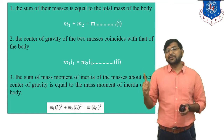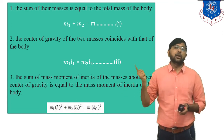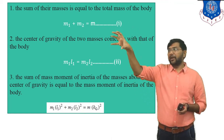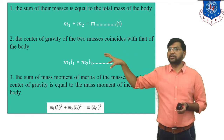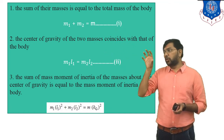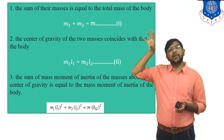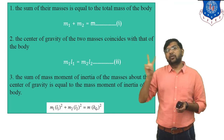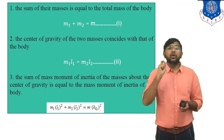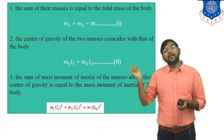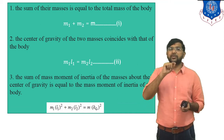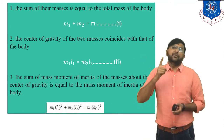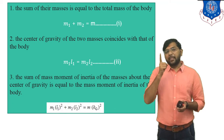First condition: the sum of their masses is equal to the total mass of the body. The mass of the rigid body is capital M, and we consider it as a two-mass system M1 and M2. So the total of these two masses must equal the mass of the rigid body: M1 plus M2 is equal to M. That is the first condition.